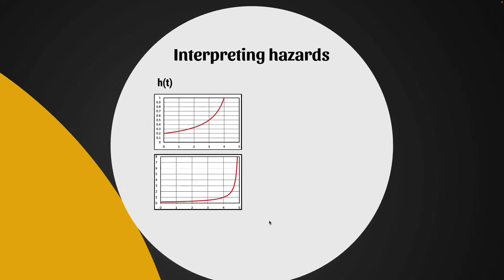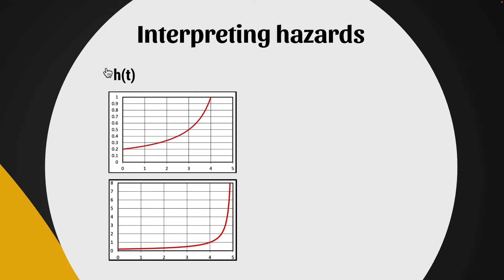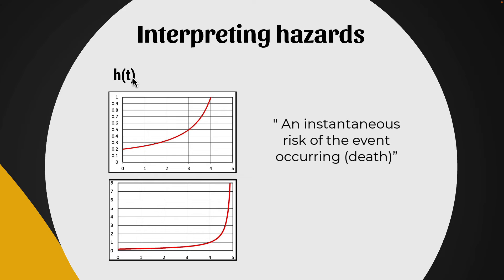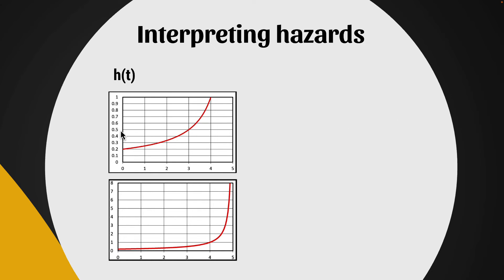Interpreting hazards: a hazard can be considered as an instantaneous risk of the event occurring at any point in time. At three years we have an instantaneous risk of death of 0.5, whereas at four years the risk of death is one. So it's double the risk of death — double the hazard — at time four compared to time three. But what are the units of hazard? What do 0.5 and one actually mean?